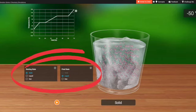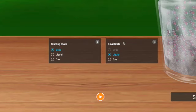When you open up the interactive, the first thing I want you to take a look at is this starting state and final state section. For our first investigation, we're going to click solid as our starting state and liquid as our final state. Then we're going to click play at the bottom of the screen.